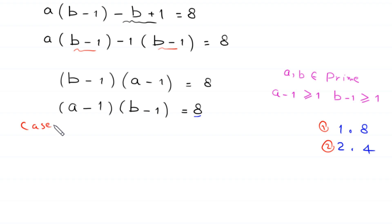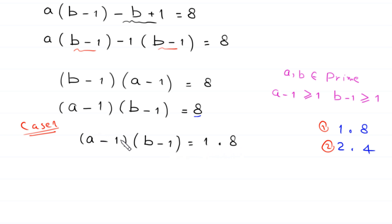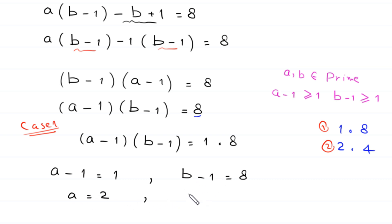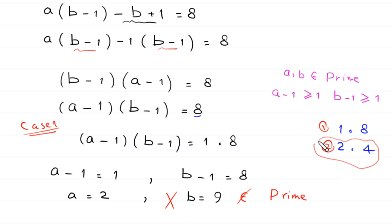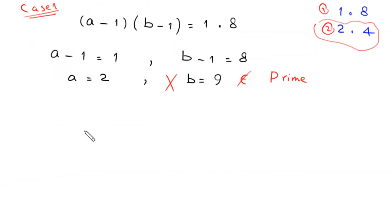In Case 1, we write (a minus 1)(b minus 1) equals 1 times 8. So a minus 1 equals 1 and b minus 1 equals 8. From these, a equals 2 and b equals 9. However, 9 is not a prime number, so this solution is rejected.